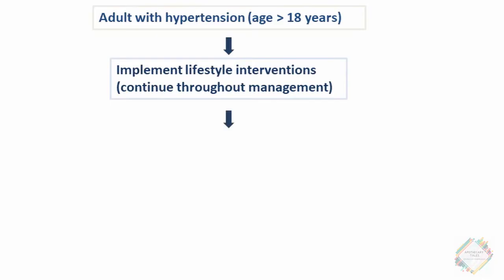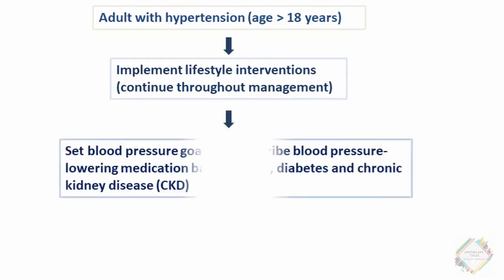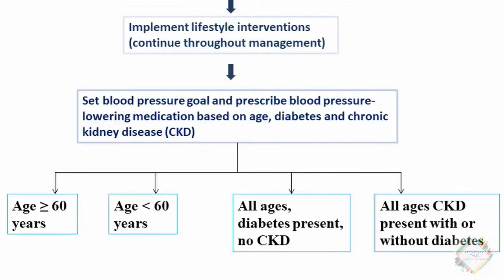Then we set up a blood pressure goal and prescribe blood pressure-lowering medication based on three factors: age, diabetes, and chronic kidney disease. Based on these three factors, there are four categories: age greater than or equal to 60 years, age less than 60 years, all ages with diabetes and no CKD, and all ages with CKD with or without diabetes.